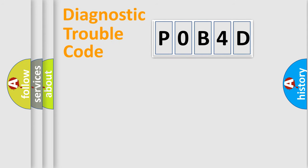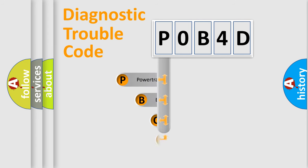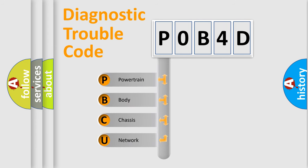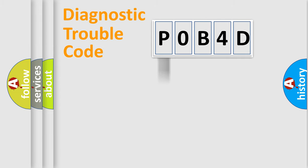First, let's look at the history of diagnostic fault code composition according to the OBD-2 protocol, which is unified for all automakers since 2000. We divide the electric system of an automobile into four basic units: Powertrain, Body, Chassis, and Network. This distribution is defined in the first character of the code.